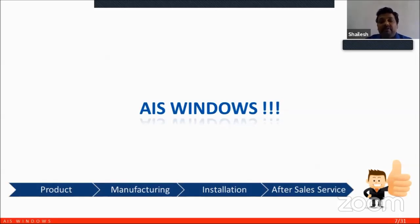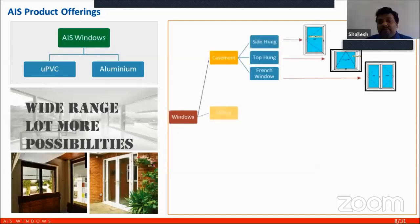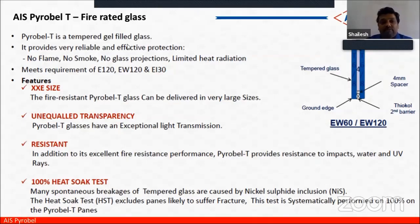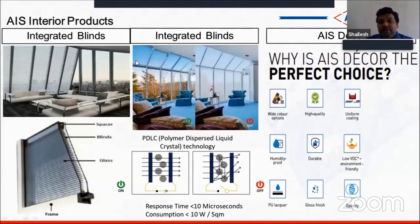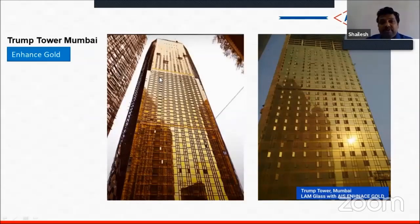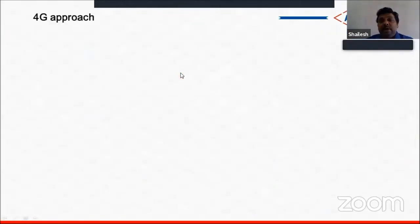AIS differentiates itself through an organized system from product to installation and after-sales service. They also offer fire-rated glass products, now increasingly mandated by NBC fire glazing requirements. Additionally, they have interior glass products and in-house NPD capabilities, though time constraints limit elaboration.